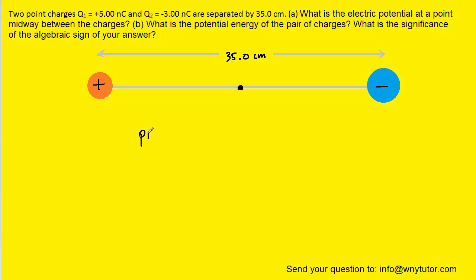And we know that the electrical potential energy between two point charges is simply K multiplied by the first charge, multiplied by the second charge, divided by the distance between them. So in this case, for the distance, we're going to use the full 35 centimeters.